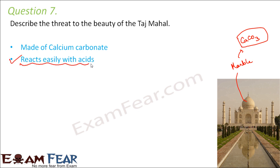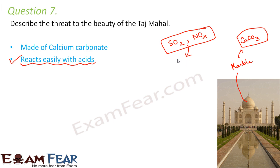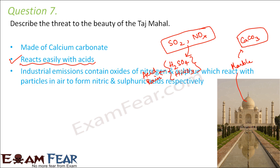The nearby factories and industries located in Agra release a lot of sulfur dioxide and nitrogen oxides into the atmosphere. These sulfur and nitrogen oxides combine easily with the tiny water particles present in the atmosphere to form acids like sulfuric acid and nitric acid. These acids remain in clouds, and when those clouds fall as rain, that constitutes acid rain. Industrial emissions containing oxides of nitrogen and sulfur react with particles in air to form nitric and sulfuric acid, resulting in acid rain which corrodes the marble.